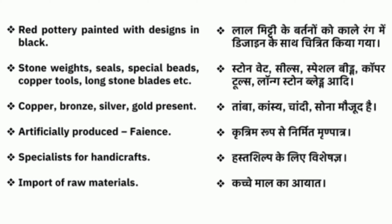Stone weights, seals, special beads, copper tools, stone - adhi, tamba, kaasya (bronze), chaandi, sona maujud hai. Kritrim roop se nirmit mirn paath (terracotta) ke images bhi milte hain. Hastsilpiks ke liye visheshagya kachcha maal ka ayat kiya karte the.